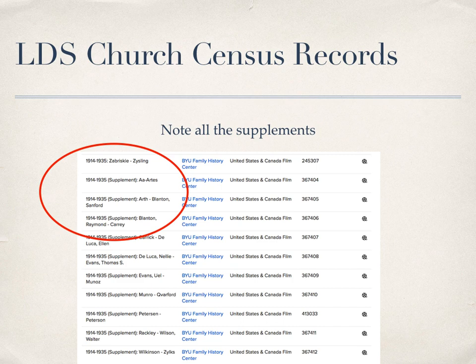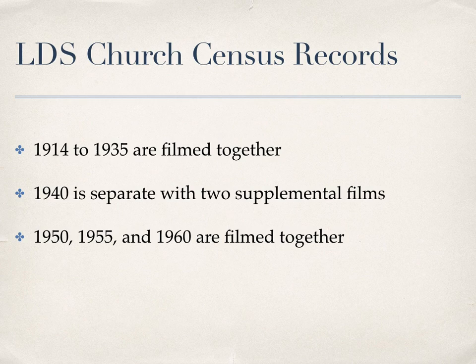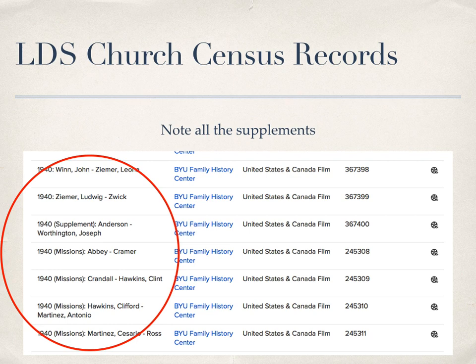As you scroll through looking for the last names of families you're trying to research, note that at the end of the alphabet there are supplements — so don't stop at the end of the alphabet if you're not finding the names you're looking for. The 1914 to 1935 census records are filmed together and alphabetized together, making it easy to track a family through the years. The 1940 census is separate with its own microfilm and two supplemental films, and then the last three census records are filmed together. In 1940, the missions were separate, so check carefully so you don't miss any ancestors.